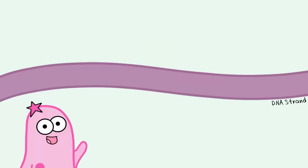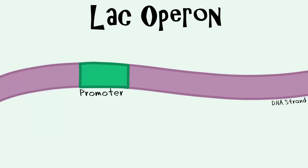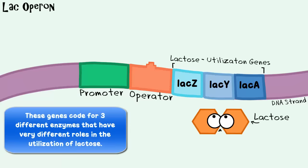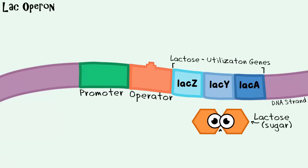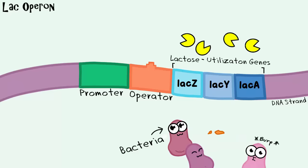Let's take a look at our setup here. This is an example called a lac operon. Notice there's a promoter region of the DNA, the operator region of the DNA, and there are three genes that code for enzymes that help in the process of breaking down lactose. Lactose is a sugar. If lactose sugar is around, bacteria want these enzymes to be made so that they can use them to break down the lactose sugar and metabolize it. Fed bacteria are happy bacteria.